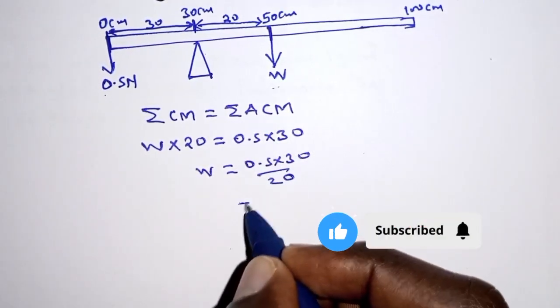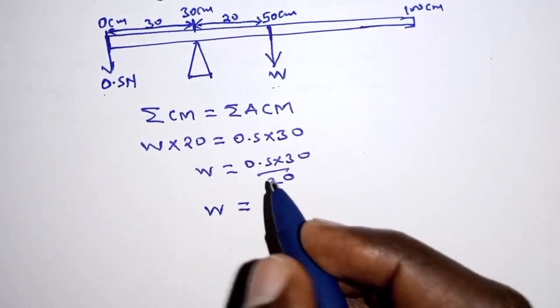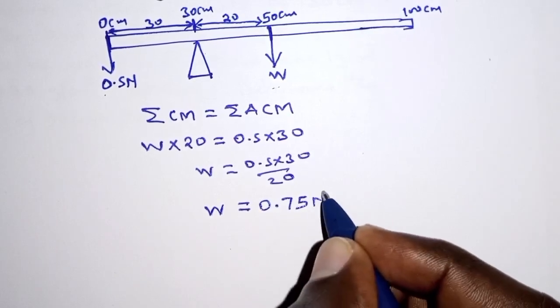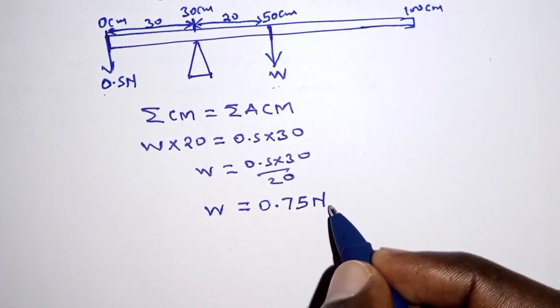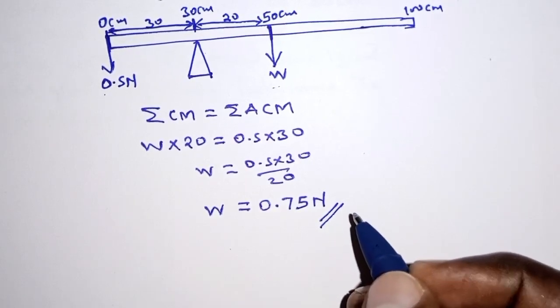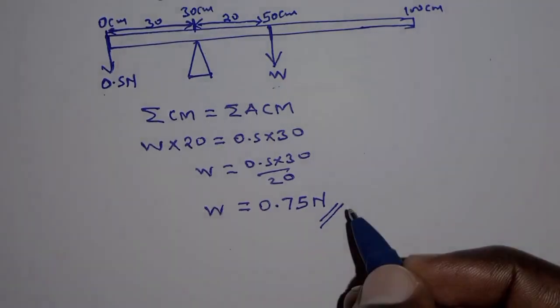Now when we work out this, we realize that the weight of the meter rule is 0.75 newtons. And with that we come to the end of this question. Thank you for watching. See you in the next one. Take care. Bye.